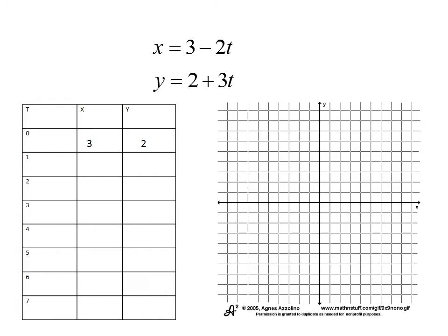I do the same thing for one. So three minus two times one is one. And two plus three times one is five. Then I put in two. So three minus two times two is three minus four, negative one. And then my y value, that would be two plus six, eight. If I put in three for t, I get three minus six and two plus nine. If I put in four, I get three minus eight and two plus twelve.